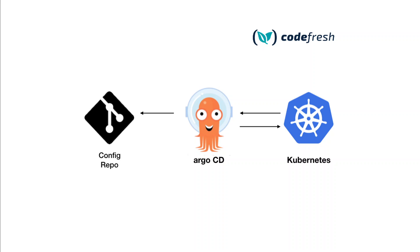In very simple words, whenever something is committed on the left hand side in the repo, Argo CD picks it up and applies it on the Kubernetes cluster. What Argo CD is trying to do is match your desired state in your Git to your current state in the Kubernetes cluster.